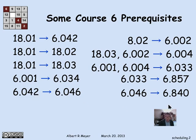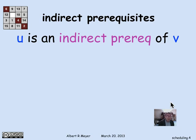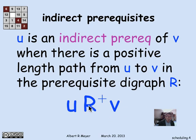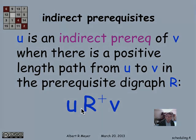So 6.042 is an indirect prerequisite of 6.840. In graph language, a subject u is an indirect prerequisite of v when there's a positive-length path from u to v in the digraph describing prerequisite structure. Using our notation, r+ denotes the positive-length path relation of a digraph r — it simply means u r+ v, which is read as 'there is a positive-length path from u to v.'